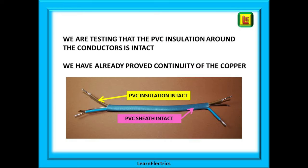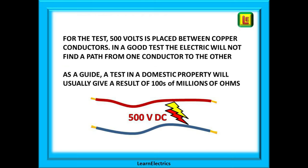We are testing that the PVC insulation and the sheathing around the copper conductors is intact — no breaks, no cuts, no nails or screws, no crushed cables. We have already proved continuity of the copper; now we want to make sure that the phase, the neutral, and the earth are all physically separate from each other. For domestic wiring, 500 volts is placed between the copper conductors. In a good test, the electricity will not find a path from one conductor to the other. It is assumed that if 500 volts cannot find a way through, then all will be okay when operating normally at 230 volts. As a guide, a test in a domestic property will usually give a result of hundreds of millions of ohms of resistance between the conductors.